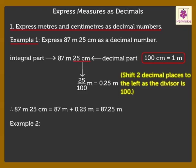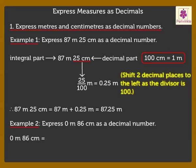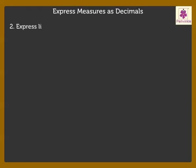Let us solve one more example. Express 0 meters and 86 centimeters as a decimal number. 0 meters and 86 centimeters is equal to 0 meters plus 86 upon 100 meters, which is equal to 0 meters plus 0.86 meters, which is equal to 0.86 meters.